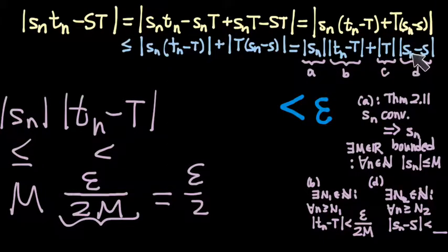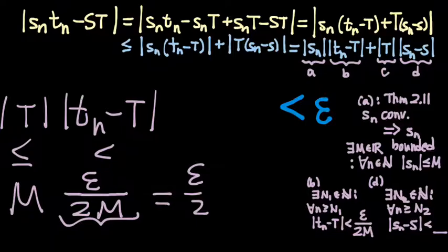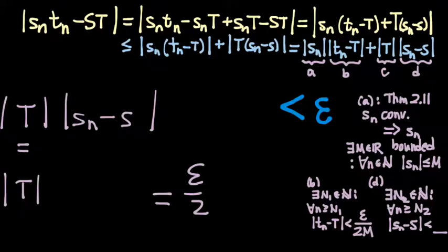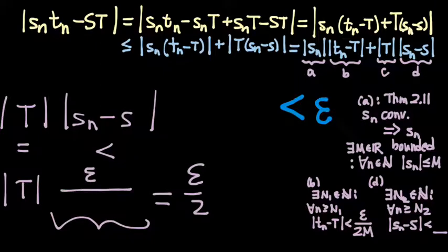We play the same game for Sn minus S. There we have the product of absolute value of T and absolute value of Sn minus S, and we'd like to make that product less than epsilon over 2 as well. Doing the algebra, we find we need Sn minus S to be less than epsilon over 2 absolute value of T, then putting a 2 in the denominator as well to ensure the product is smaller than half epsilon.